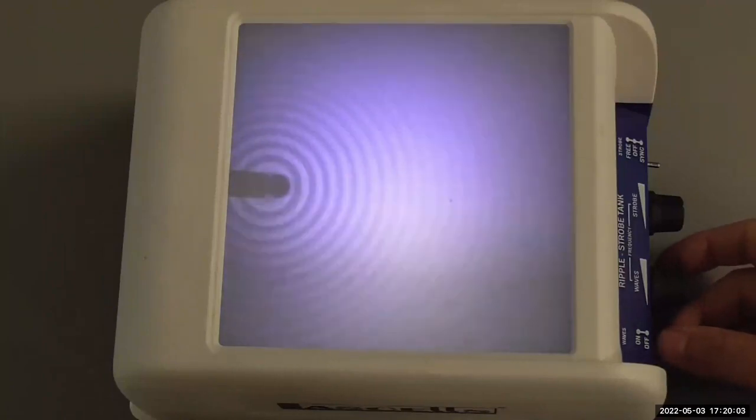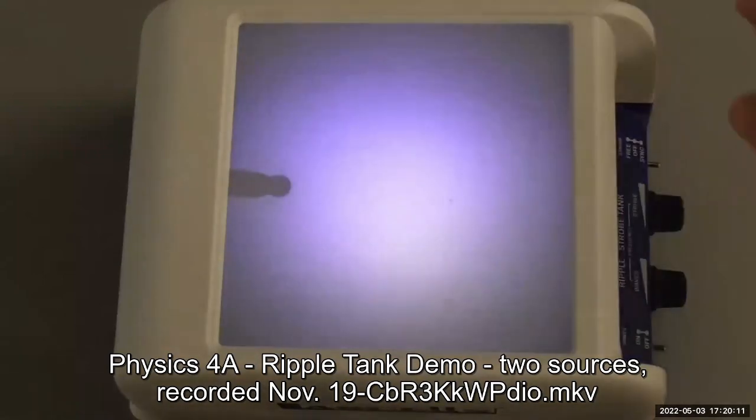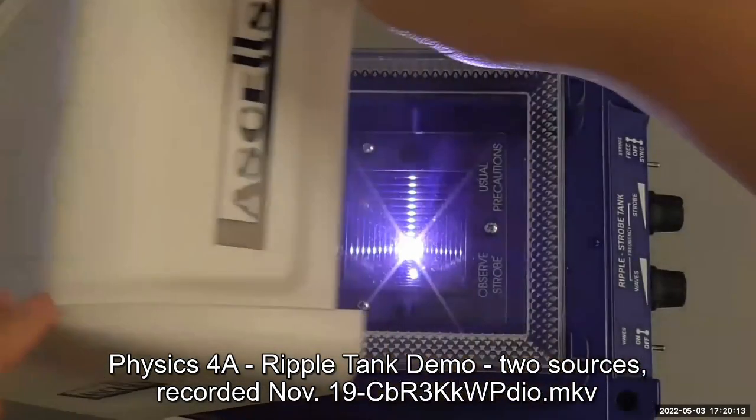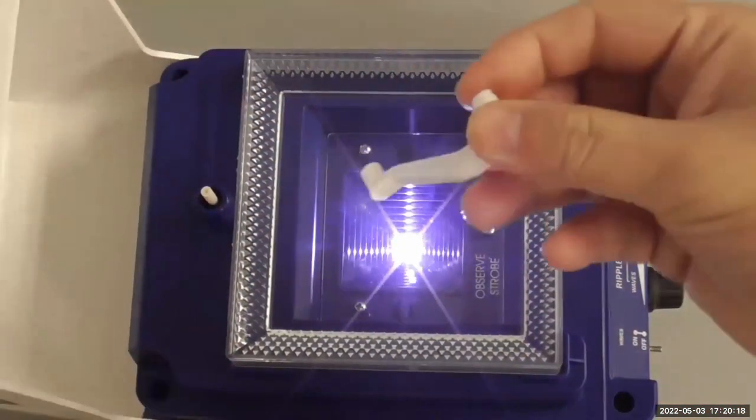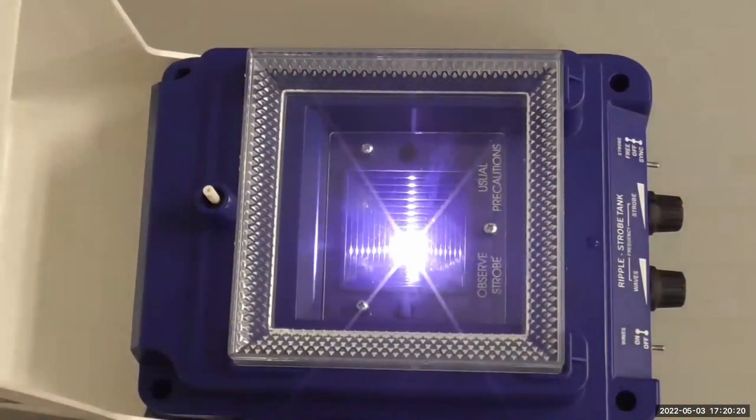I'm about to switch to the two source. I'm going to turn it off, remove the attachment for the point source, and I'll have the two source. Again, a bit of a seizure warning. If the flashing lights are causing you discomfort, please look away.